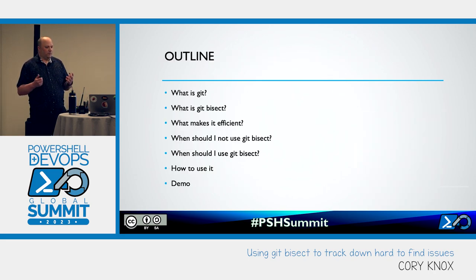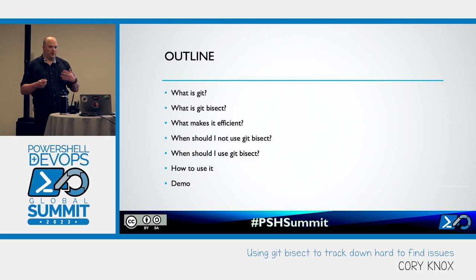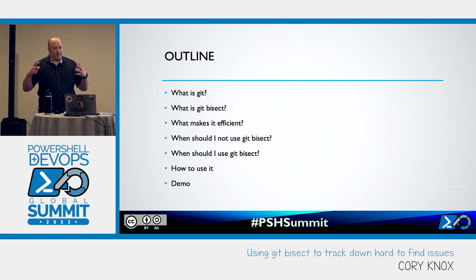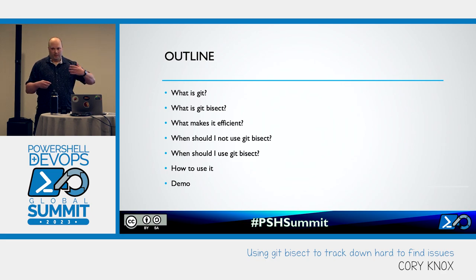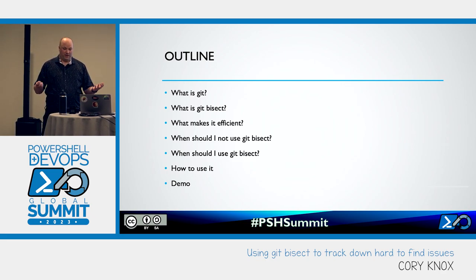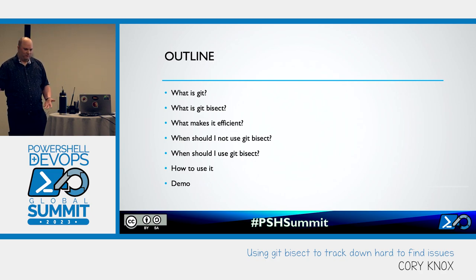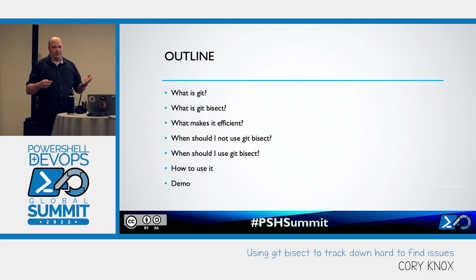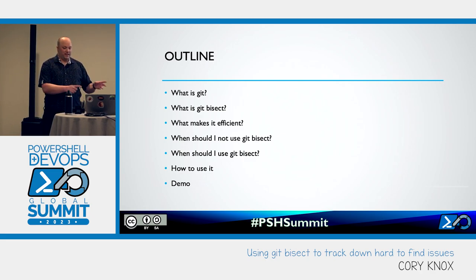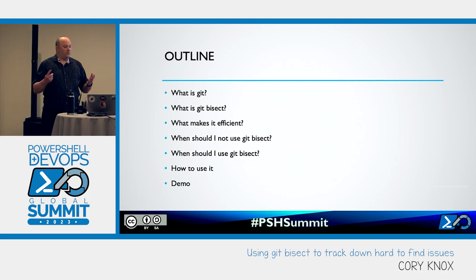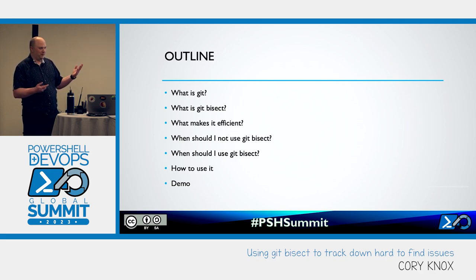So today I'm going to talk about Git bisect. A brief outline: I'll go over what Git is, what makes it useful, and in particular what makes it useful for Git bisect. Then we'll cover what Git bisect is and what makes it efficient. Then we'll get into the nuts and bolts of when not to use Git bisect — because when all you have is a hammer, everything looks like a nail. And once we cover when not to, I'll give you an example of when to use it, as well as how to use it.